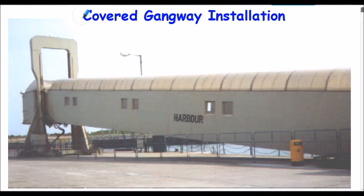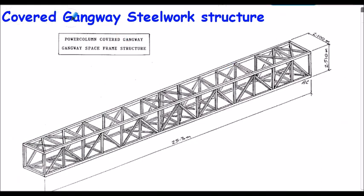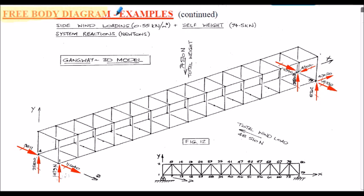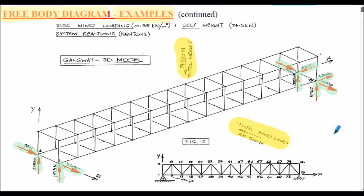Here's what was termed a covered gangway installation, used at a harbour to load and unload passengers from ships. Here's the free-body diagram for this gangway example — in this case we considered a total downward force (the weight) whilst concurrently experiencing a side wind force. This is the reactive system at the left-hand end of the gangway and the reactive system at the right-hand end. The bracing bars are not shown on this sketch for clarity purposes.